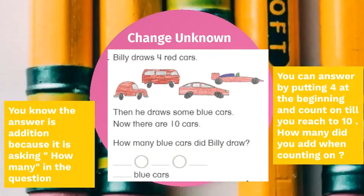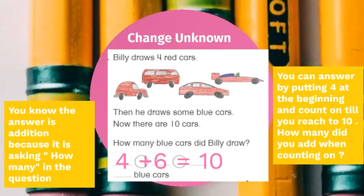When it's asked in a question, what do we do? Read the question: Billy draws four red cars, then he draws some more cars, and then he has all 10 all together. What is the missing addend? Four is at the beginning because it's the number that was first — the number that we know — because he drew four first. And 10 is at the end because we know how much he had all together. The missing number in the middle is six.